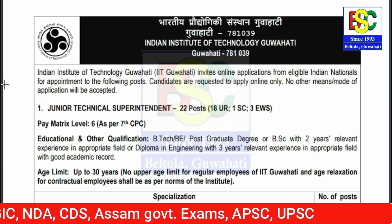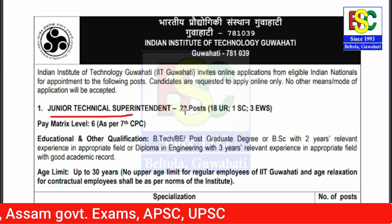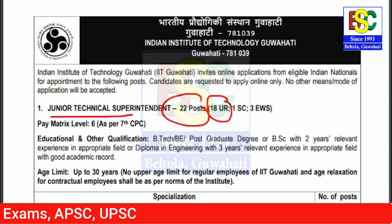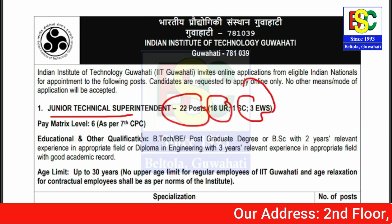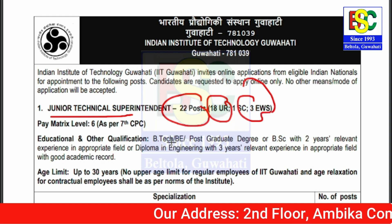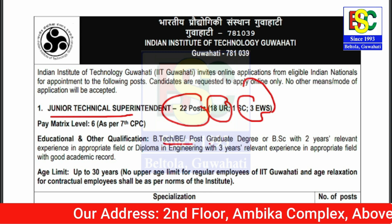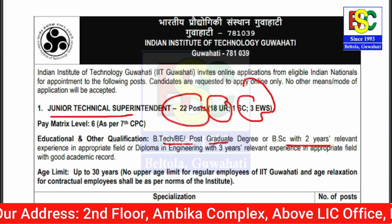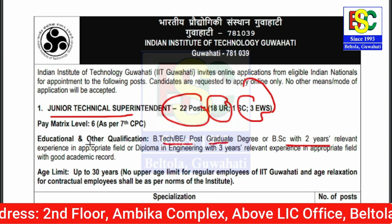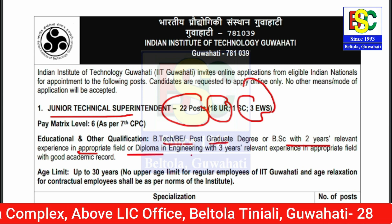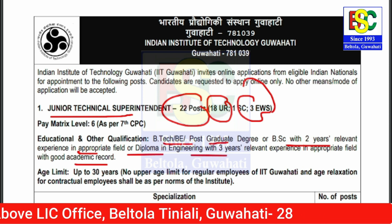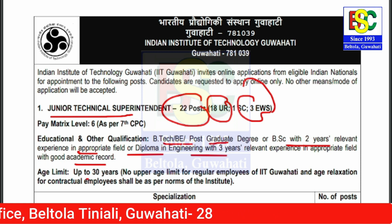You can check the posts. First of all, there is a Junior Technical Superintendent post — 22 posts total. That includes Unreserved, SC/ST, 1 SC/ST, and 3 EWS. You have to have a post graduation degree or BSc with 2 years relevant experience in the field, or a diploma in engineering with 3 years relevant experience with a good academic record.